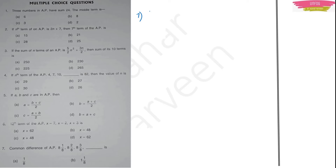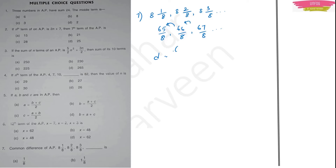Question 7: Find the common difference of the AP 8⅛, 8²⁄₈, 8³⁄₈. Convert to improper fractions: 65/8, 66/8, 67/8. Common difference = 66/8 − 65/8 = 1/8. So option A, 1/8, is the right answer.